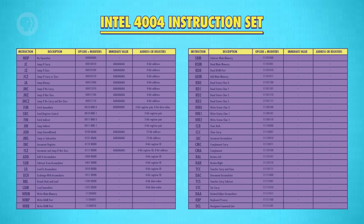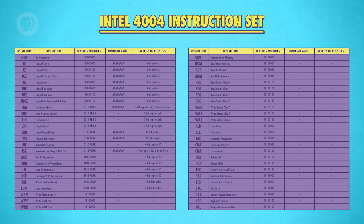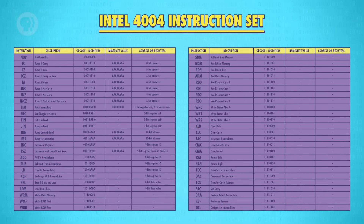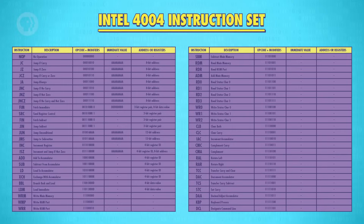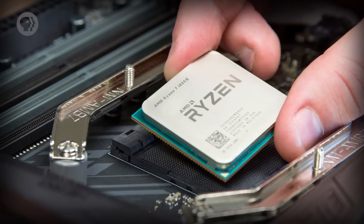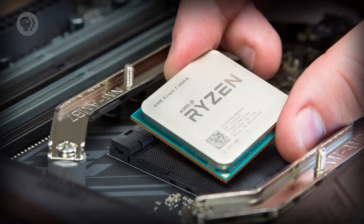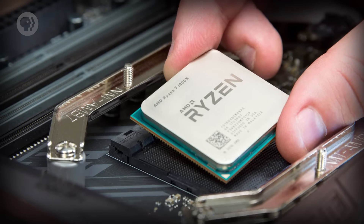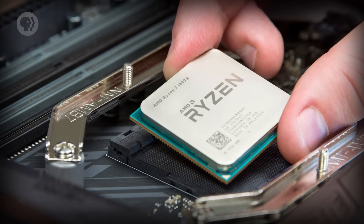The Intel 4004, the first truly integrated CPU, had 46 instructions, which was enough to build a fully functional computer. But a modern computer processor has thousands of different instructions, which utilizes all sorts of clever and complex internal circuitry.